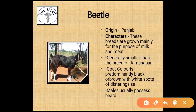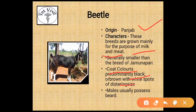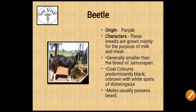The next breed is Beetle. Its origin is Punjab. These breeds are grown mainly for milk and meat. Generally smaller than Jamunapuri. Coat color is predominantly black or brown with white spots. They have distinct legs which are mainly white, and males usually possess a beard.